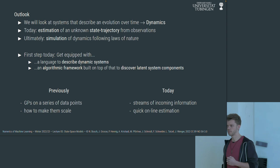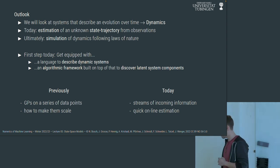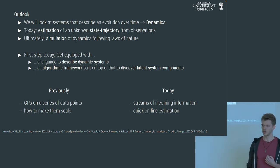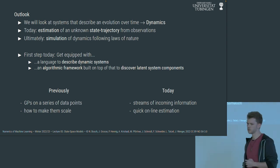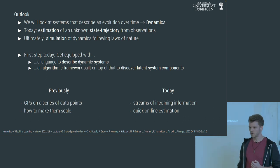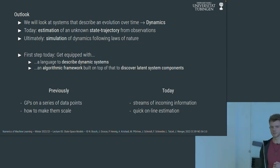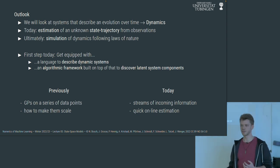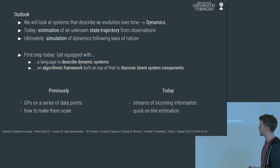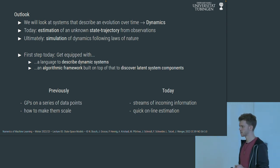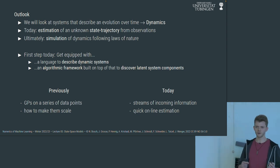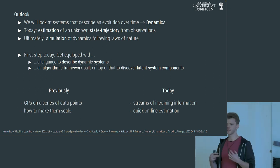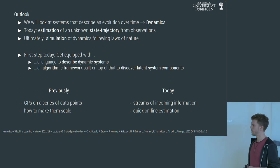Similar to the structure that Jonathan Wenger and Marvin chose for the linear algebra and Gaussian process lectures, we first have to chew through a bit of theory that has been around for quite a while, in order to get to the cool stuff. Today we establish groundwork and construct a language to describe dynamic systems. Previously you learned about linear algebra and Gaussian processes — a regression task finding a posterior over a function for a fixed data set. Jonathan showed us last week how to make these techniques scale on huge data sets.